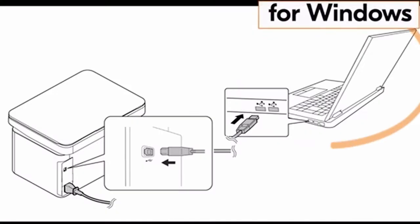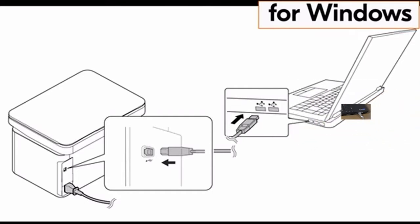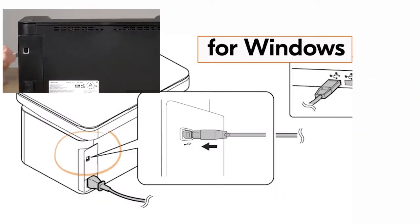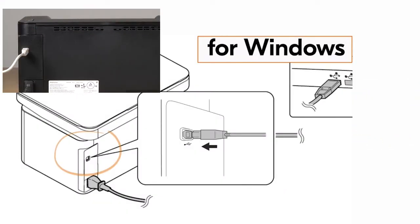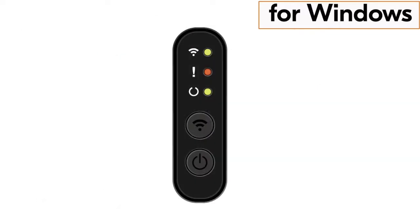Plug one end of the USB cable into the Windows computer and the other end into the PA2000 printer. The printer control panel is located on top of the machine. Push the power button located here.